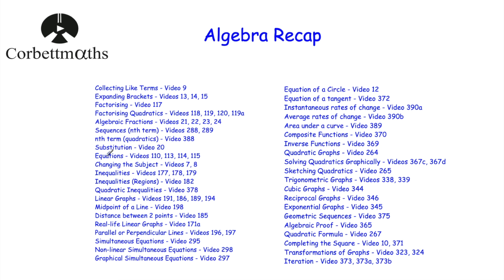Substitution: make sure you can substitute values into expressions. Equations: solve equations with letters on both sides, harder equations, and equations you have to form first — perhaps involving angles, perimeter, or ages. Changing the subject: these are like solving equations but without working anything out numerically. For harder ones where you have more than one of the same letter, you may need to factorise. Know your inequalities: solve them and represent them on number lines.